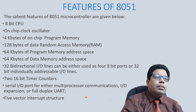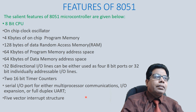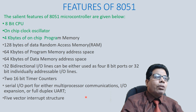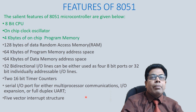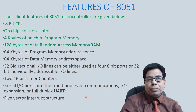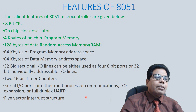Before knowing the architecture we should first know the features. It is an 8-bit CPU, it has an on-chip clock oscillator for generating the clock signal, 4 kilobytes of on-chip program memory, and 128 bytes of data RAM (random access memory).